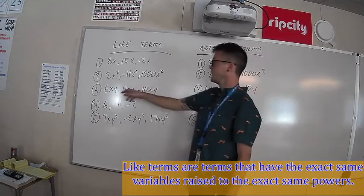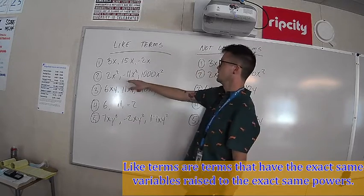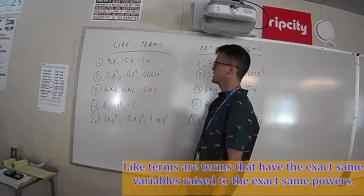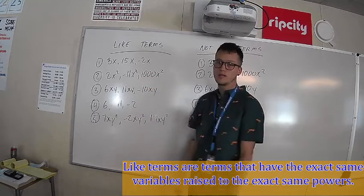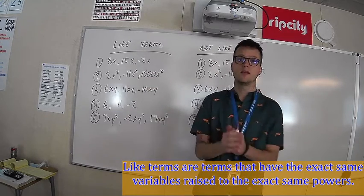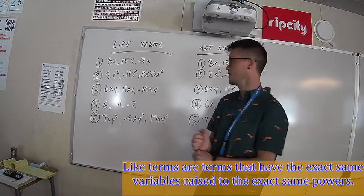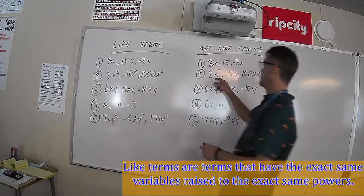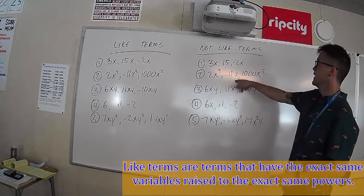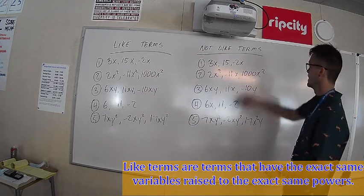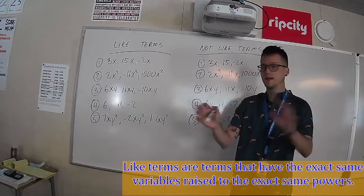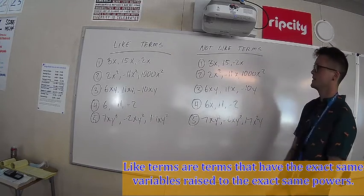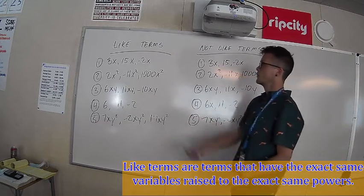Next: negative 2x squared, 2x squared, negative 11x squared, and 1000x squared — those are all like terms. They all have an x squared in them and that is the only variable; we could combine these. Over here: 2x squared, negative 11x, and 1000x squared are not like terms because the middle term, negative 11x, messes things up.